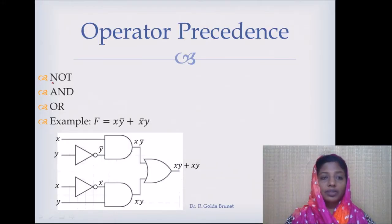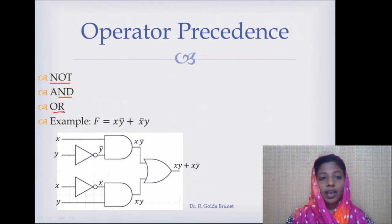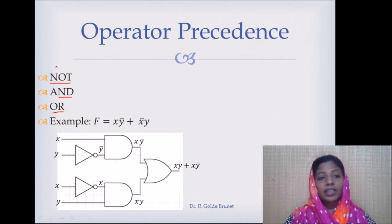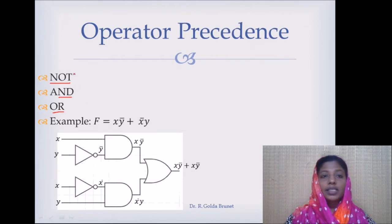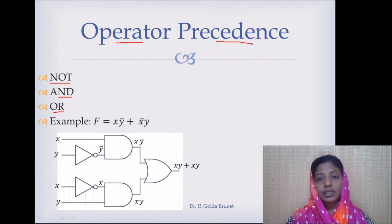Recall that we have three logical operators which are NOT, AND, and OR operations. When these three operations occur together in a Boolean function, what is the order in which the operations will be evaluated? That is what is dictated by the operator precedence.